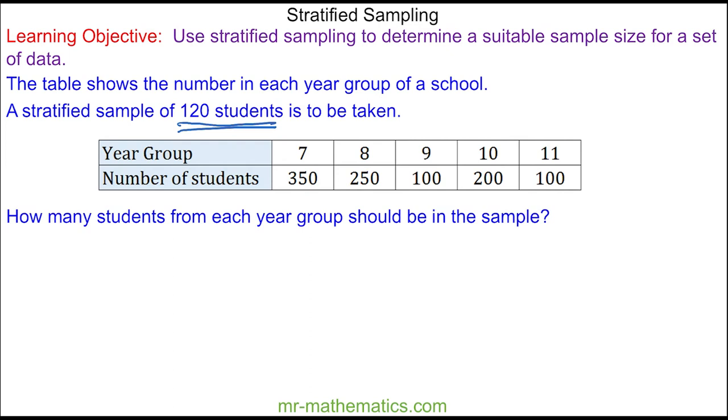We begin by working out our proportion, and we have 120 students out of a total of 1000. We can simplify this fraction to make 12 over 100, which is 0.12.